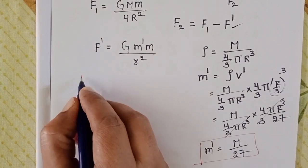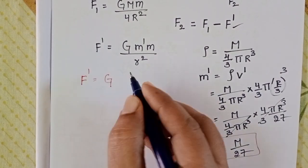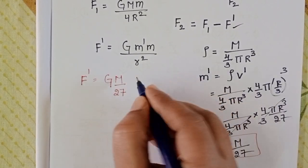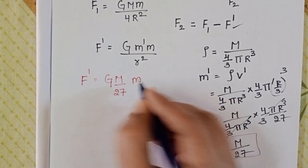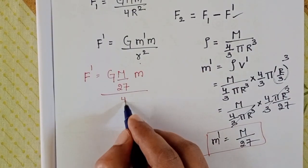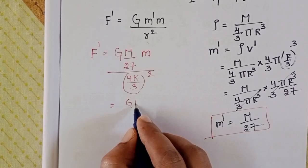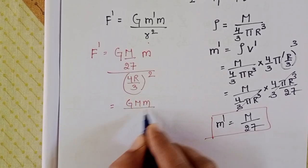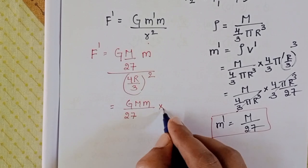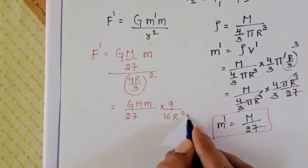Now find F_dash. F_dash equals G times the mass of the small sphere M/27, times point mass m, divided by the distance squared (4R/3)². This gives G·M·m/27, multiplied by the reciprocal of 16R²/9, which is 9/(16R²).